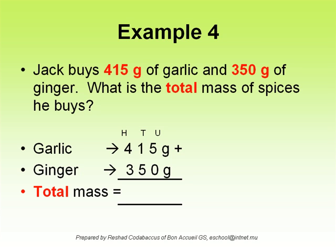Garlic: 415 grams. Ginger: 350 grams. Total mass. You can do the sum in a space on the right. The sum is 765 grams.